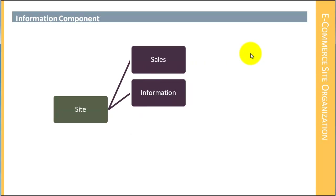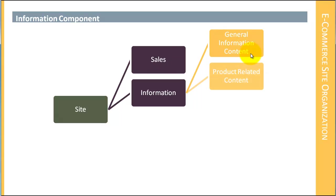The second big component is the information component. In the information component we first have general information content — things like blog posts, promotional information, stuff on posts or pages. We have product-related content, which is information on posts or pages related specifically to the description of the product.